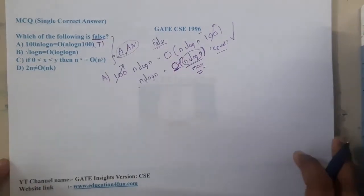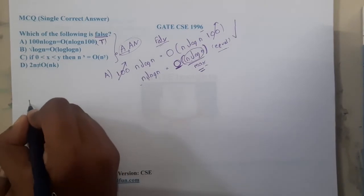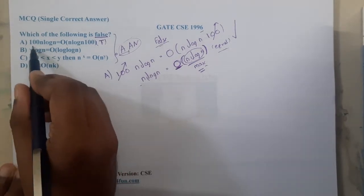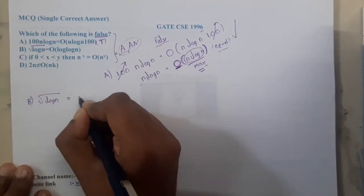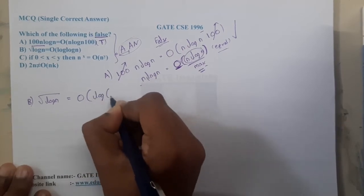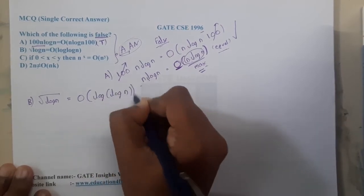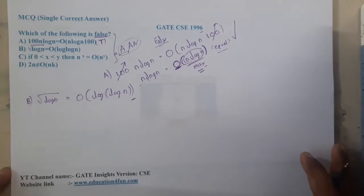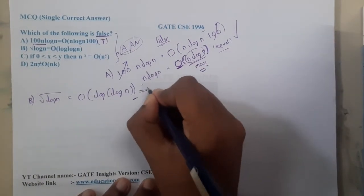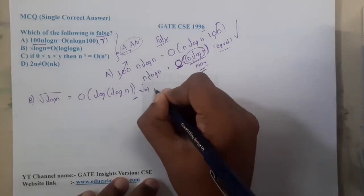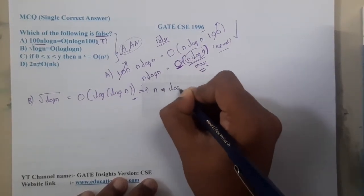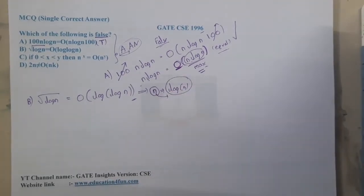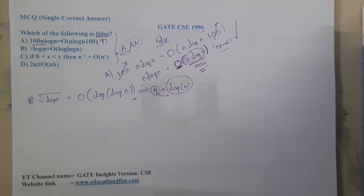Moving on to option B: √(log n) = O(log(log n)). This seems confusing. Remember one thing: for any number n, applying log always gives a lesser value — n is always greater than log n.